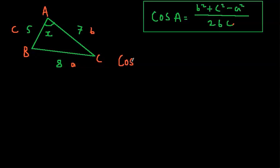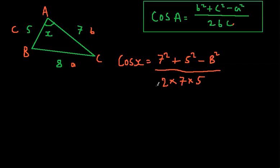So, the cos of x equals b², which we know is 7², plus c², minus 8², which is a². Okay, so we just, you know, substituted the values into the formula, and then all over 2 times by b, which is 7, times by c, which is 5, and now filling it into our calculator, we should get 0.1428.